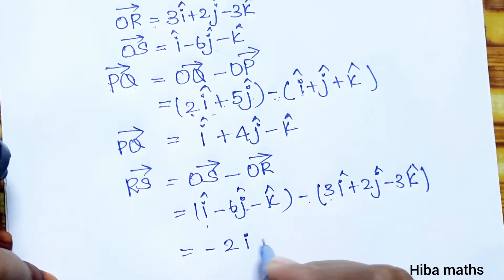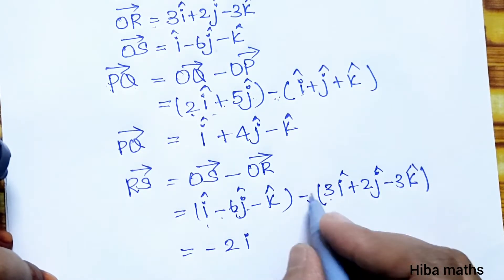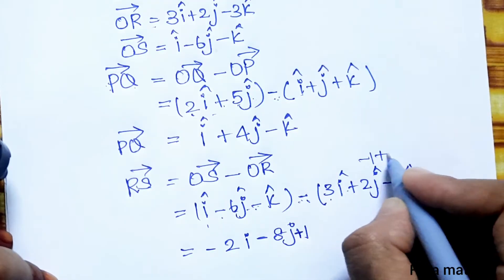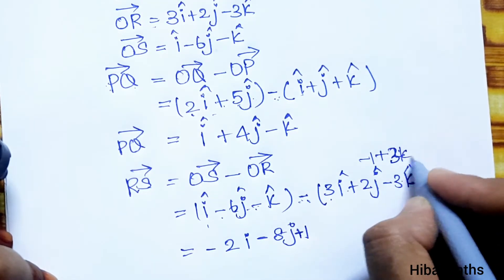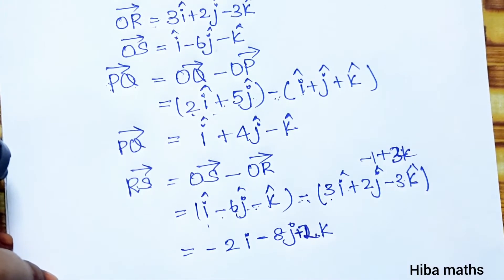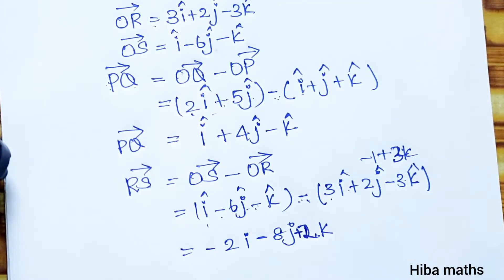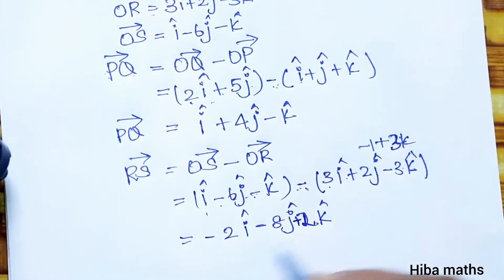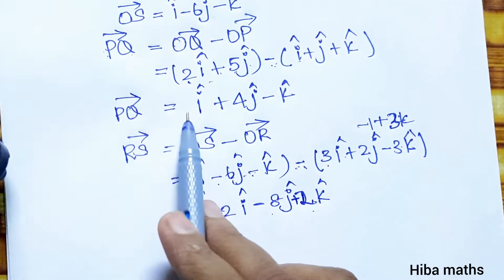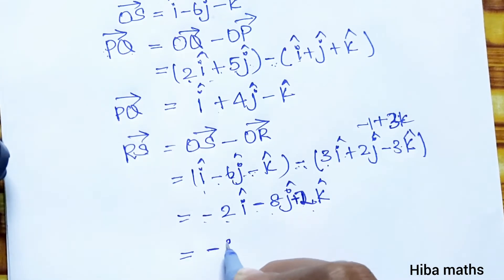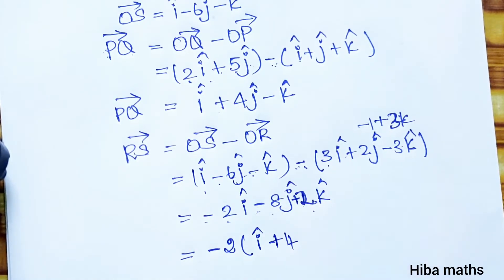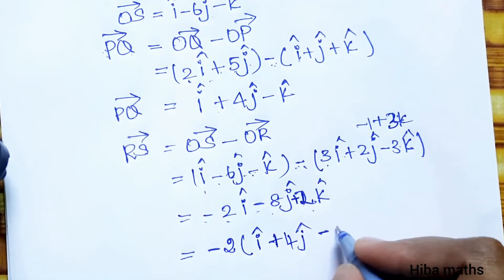Now computing RS vector equals OS minus OR. OS is i minus 6j minus k, and OR is 3i plus 2j minus 3k. Subtracting gives: (i minus 3i) plus (minus 6j minus 2j) plus (minus k plus 3k), which equals minus 2i minus 8j plus 2k.